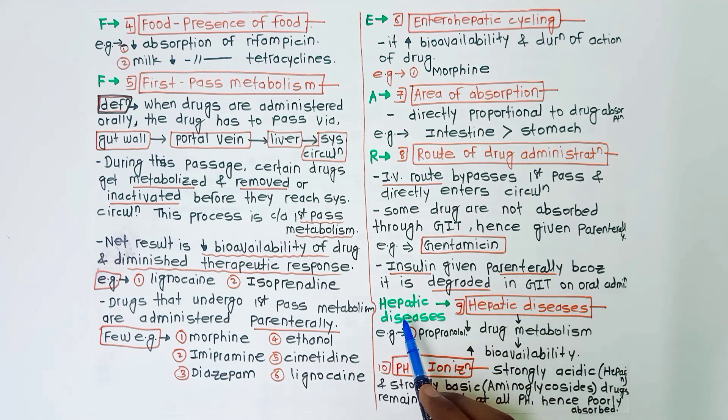Next factor is hepatic diseases. In hepatic diseases there is decreased drug metabolism which leads to increased bioavailability of the drugs, example is propranolol.